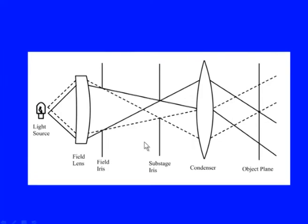Kohler illumination is much more intense and precisely controlled compared to critical illumination. An extra field lens is placed between the light source and condenser, and when light leaves the condenser it exits as many parallel pencils of light, illuminating the object uniformly at various angles. Field irises at different positions prevent stray light, giving a uniformly intense beam, and this is used in most microscopes.